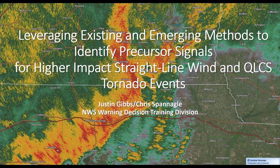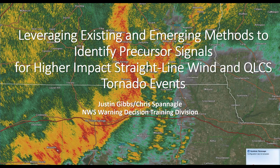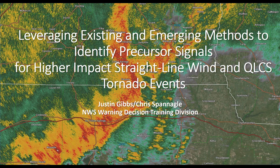The title slide here is the slightly longer version of what we summarized a little bit more effectively. Basically what we're trying to do is see what signals may be there to identify the higher end QLCS tornado and straight line wind events using some precursor signals. It basically takes a lot of what we're already doing and we just try to use it and apply it in a slightly different way.